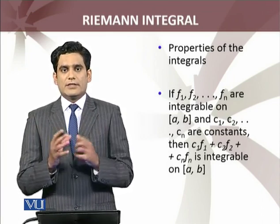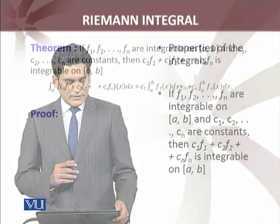generalized result जो है, ये हमने discuss करना है। So if f1, f2, up to fn are integrable on [a,b] and c1, c2, up to cn are constants, then so is their linear combination. इसको mathematical language में linear combination भी कहते हैं।